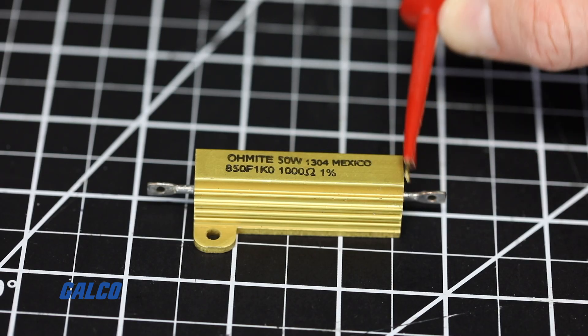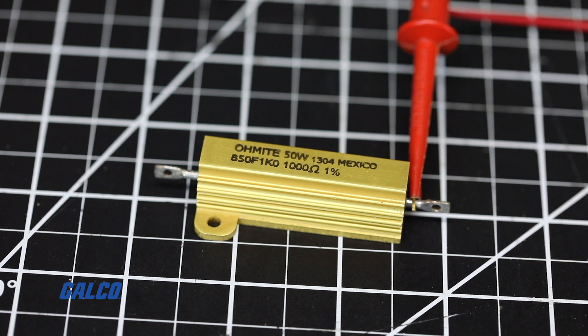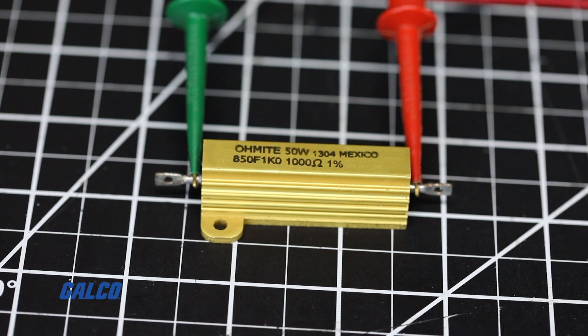Now you can attach the multimeter probes to each lead on opposite ends of the resistor, which will allow you to monitor the voltage drop as the capacitor discharges.